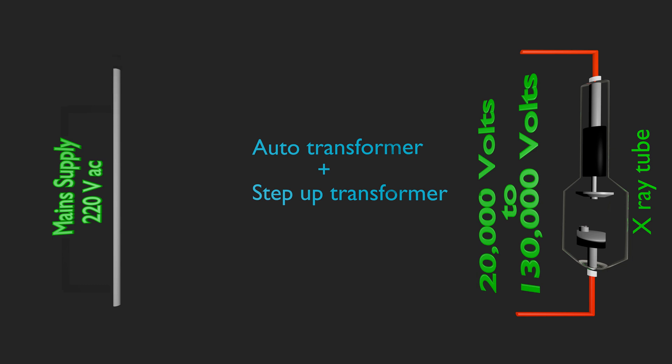An auto transformer consists of a long laminated iron core and a single continuous coil wound over it. This single winding acts as both the primary and the secondary winding of transformer. The primary section has fixed connections with 220 volt mains supply connected to the primary of the auto transformer.